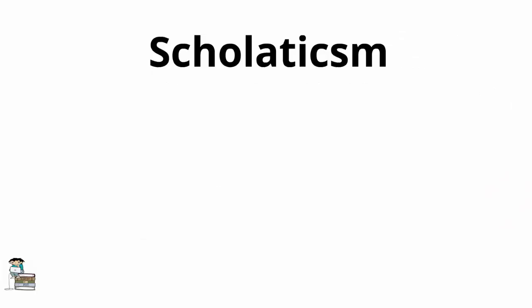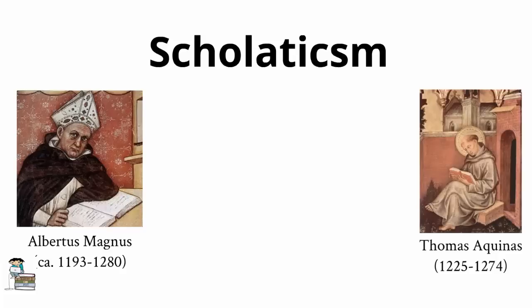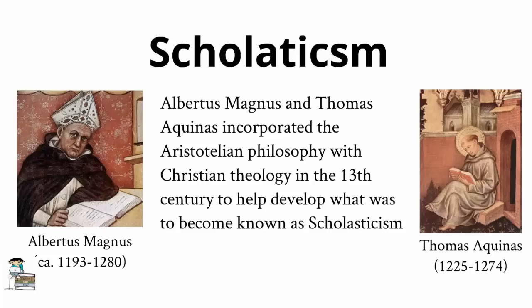Theologians such as St. Albertus Magnus and St. Thomas Aquinas incorporated the Aristotelian philosophy with Christian theology in the 13th century to help develop what was to become known as scholasticism, a system or method of thought which was to dominate many European universities well into the 17th century. In fact, many of the giants of the scientific revolution including Descartes, Galileo, and Pierre Gassendi were educated in the scholastic method, a method whose downfall they contributed to.